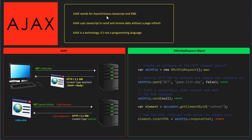The word asynchronous means that we can load content without having to refresh the page, and we can keep loading that content while at the same time still browsing the website. The data we're gonna be working with is usually in XML format, but it can also be text, HTML, or JSON. So the main feature of Ajax is that it can receive and send data without a page refresh.